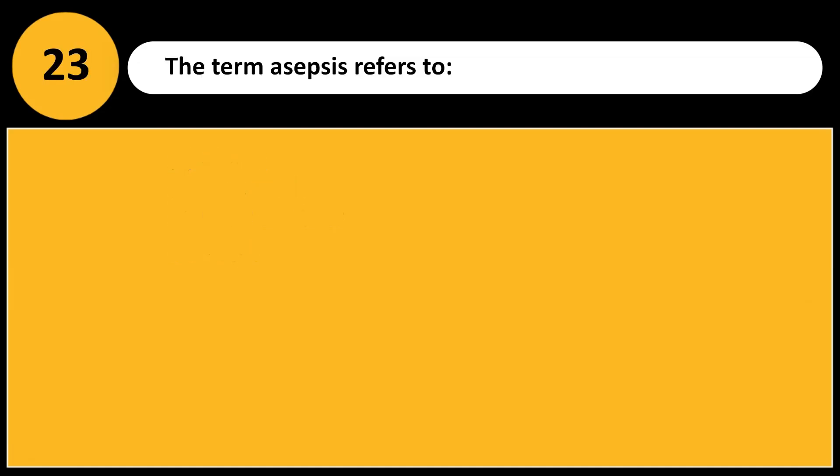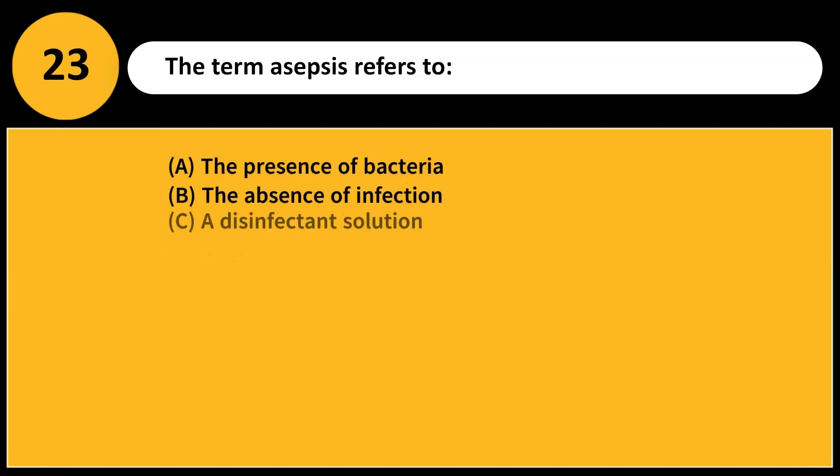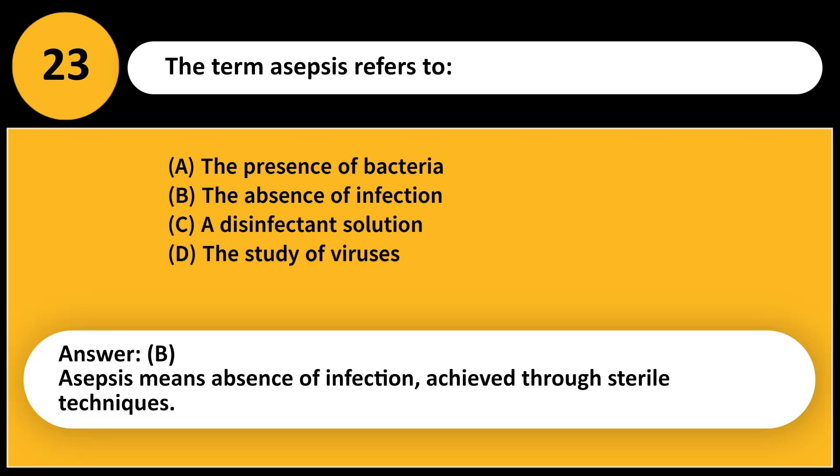The term asepsis refers to: A. The presence of bacteria. B. The absence of infection. C. A disinfectant solution. D. The study of viruses. Answer: B. Asepsis means absence of infection, achieved through sterile techniques.